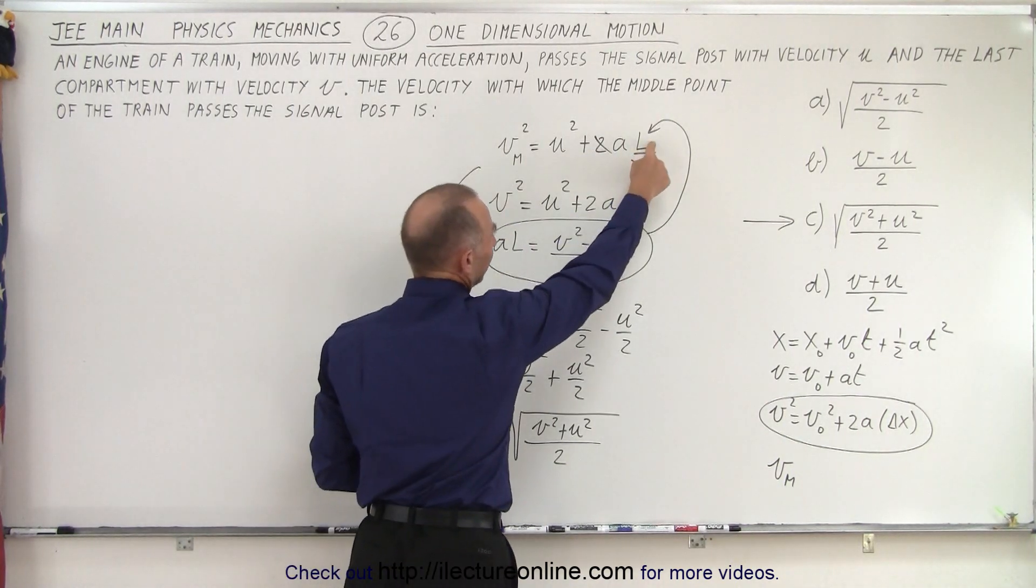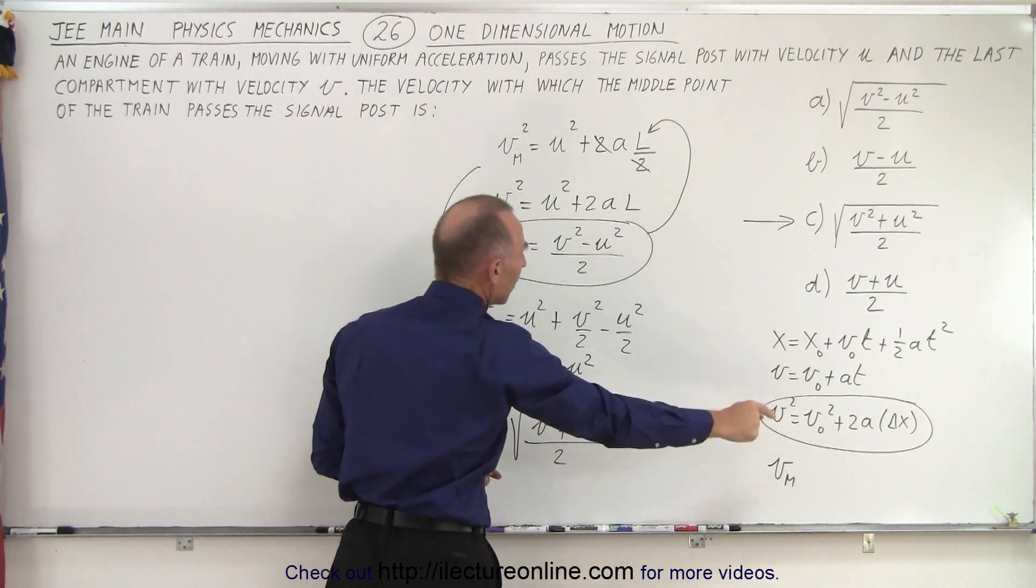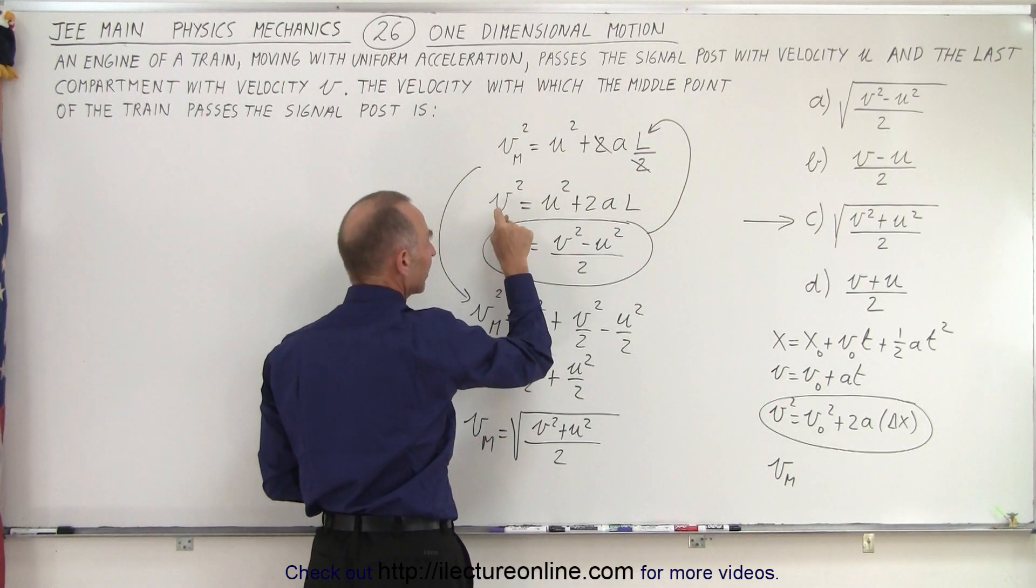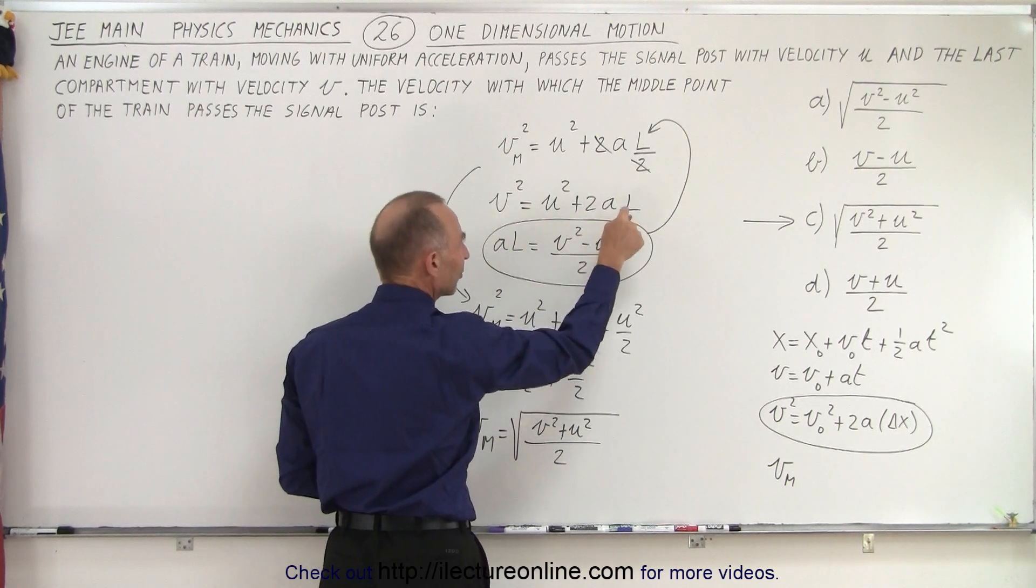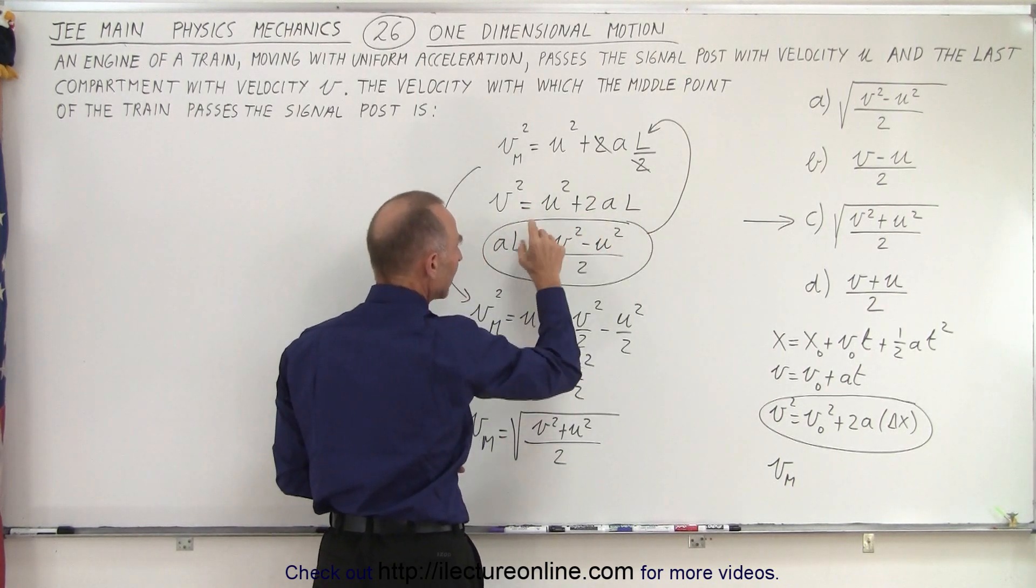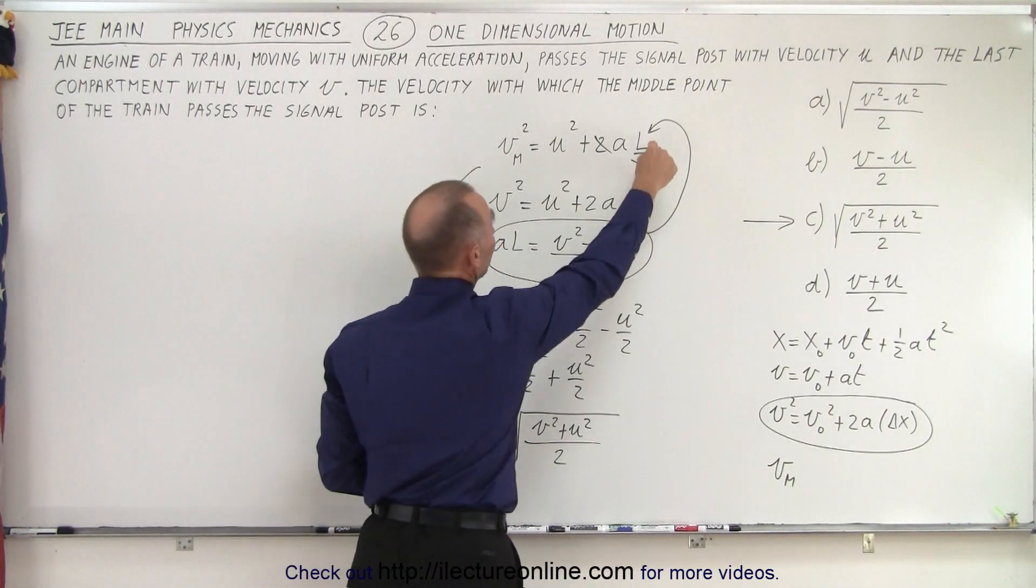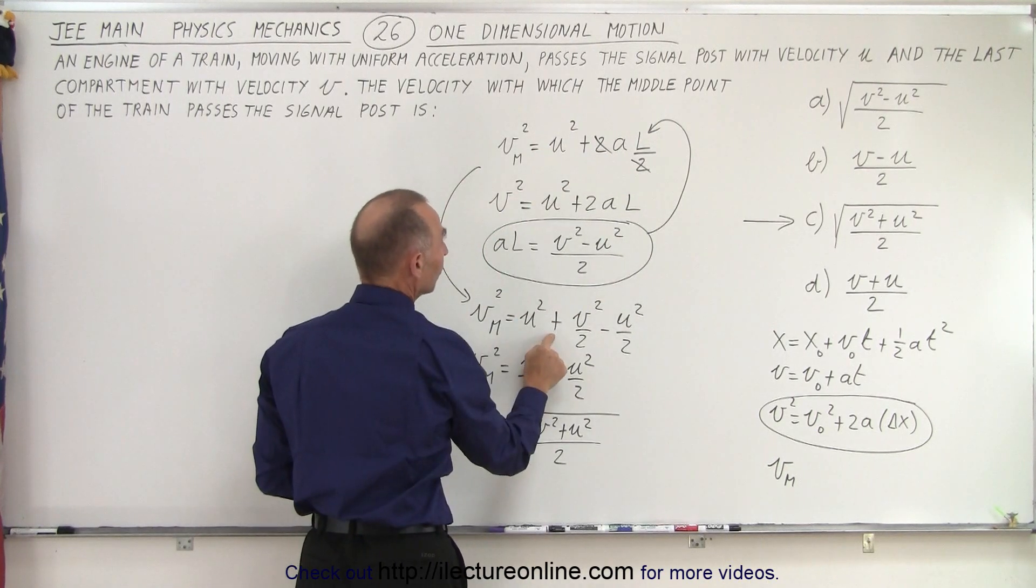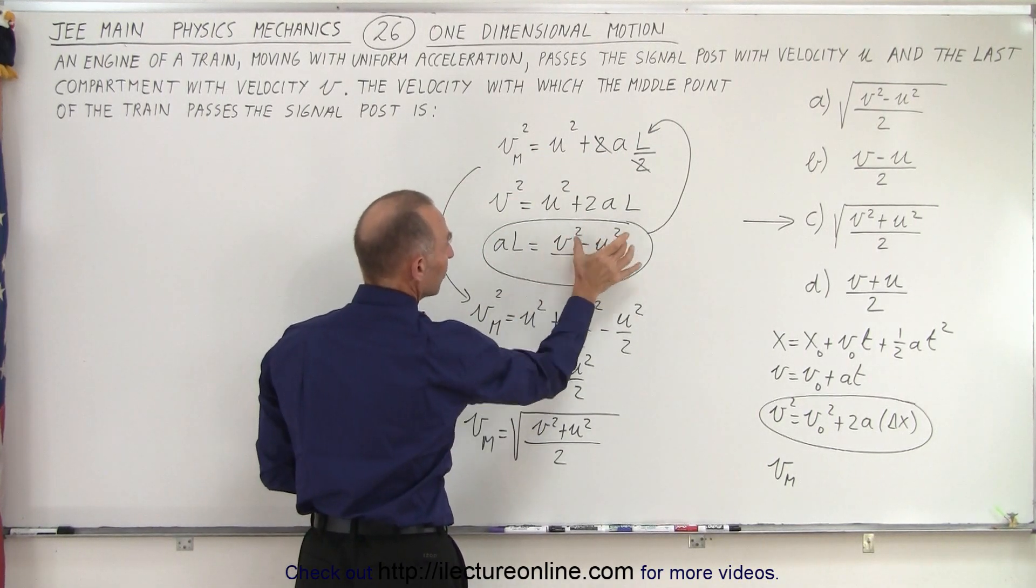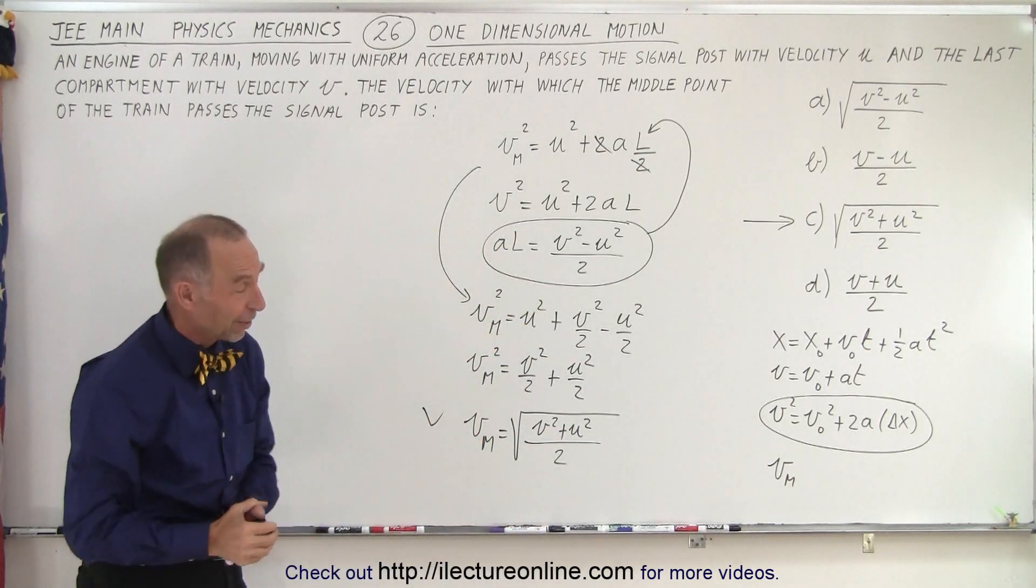But then we're stuck with a times l. So what we can do is we can then use the same equation but now we use it for the end of the train. The velocity at the end of the train equals the velocity at the beginning of the train plus 2a times the full length of the train. So now al can be expressed in terms of that. That then can be substituted in here and now we end up with this equals u squared plus v squared over 2 minus u squared over 2 and then we simplify. And that is how it's done.